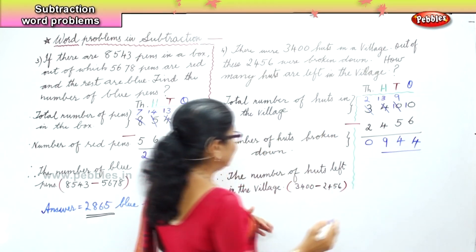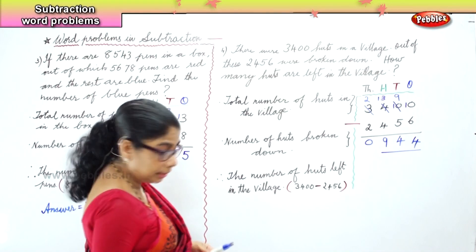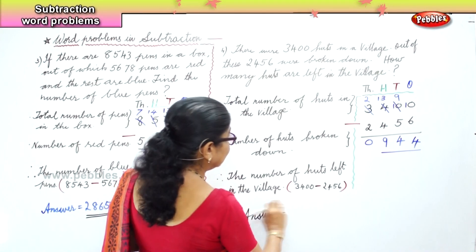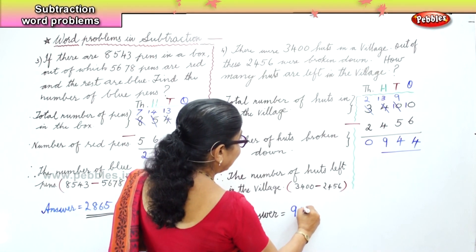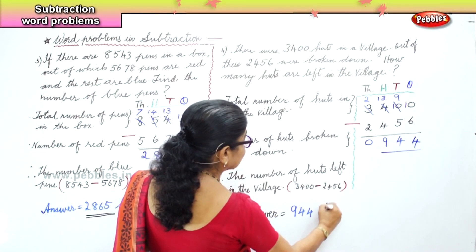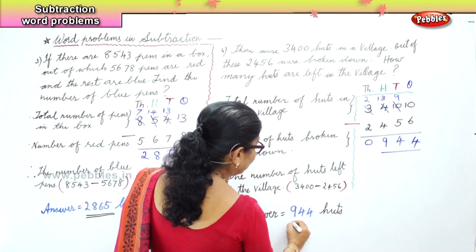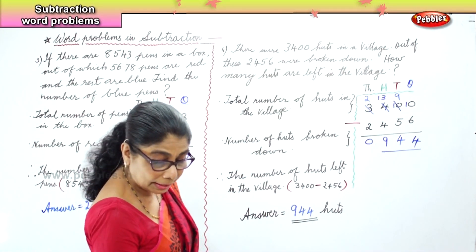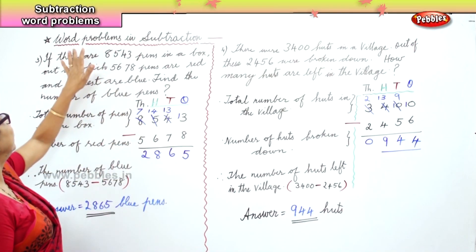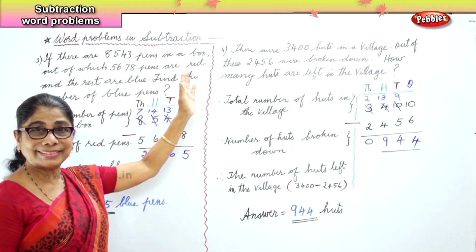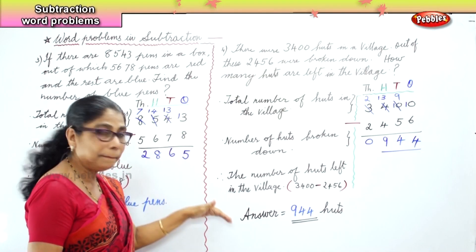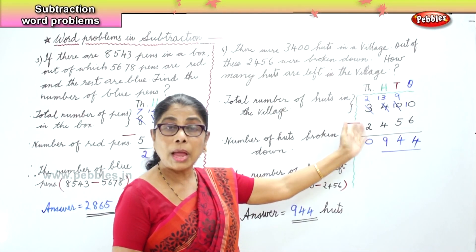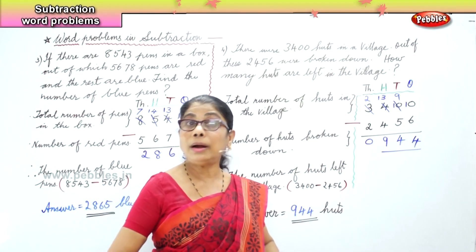So the number of hearts left — your answer is nine hundred and forty-four hearts left in the village. Today we learned to work on word problems in subtraction, write statements, place numbers correctly according to place value, and borrow carefully. We learned a lot of things today.